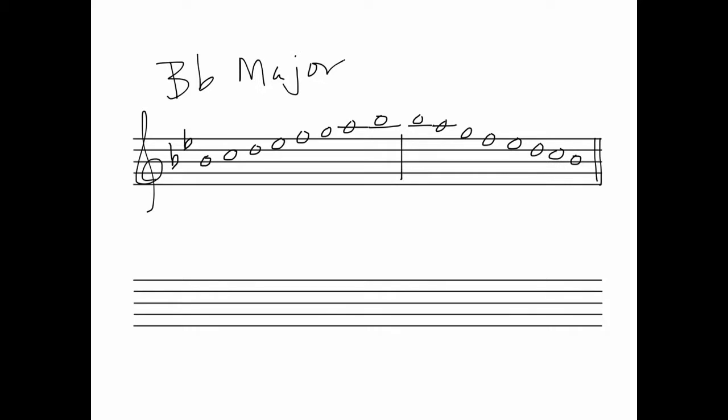Next, we'll do G natural minor. And because the relative major of G minor is B flat major, we need to use the same key signature as B flat major, which is B flat and E flat. And now we start on G instead of starting on B.